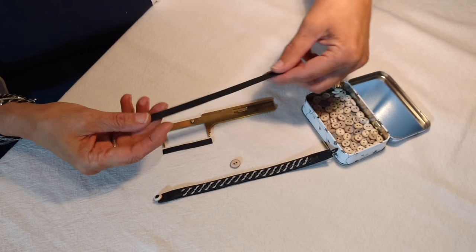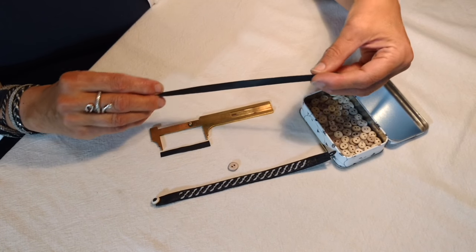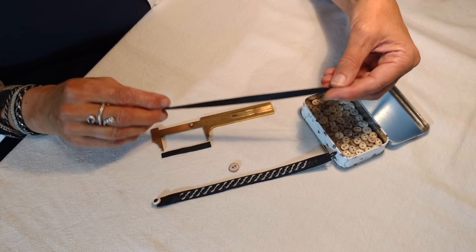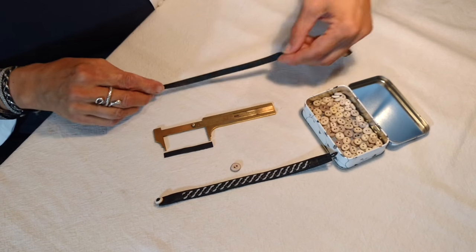Using a scrap piece of reindeer hide about a quarter of an inch wide, we're going to cut about a two inch strip.